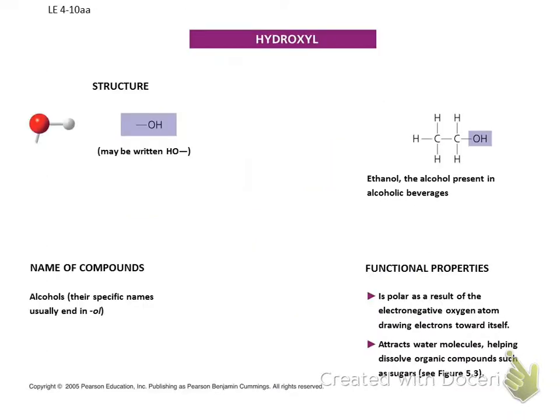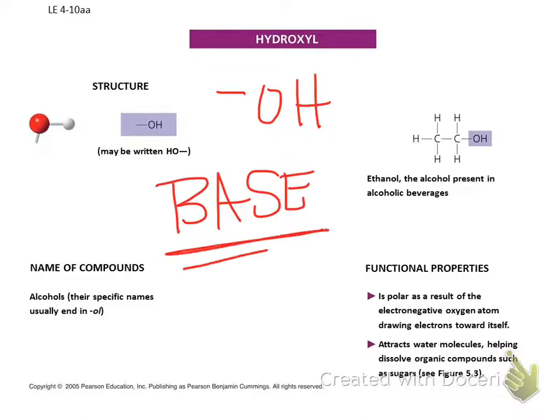The first one is hydroxyls. And all it is is an OH. So you want to draw OH on your paper. And that's a hydroxyl. And that's going to be in bases. Hydroxides are in bases, like the opposite of an acid, a base. This group allows molecules to act as an alcohol or a polar molecule.